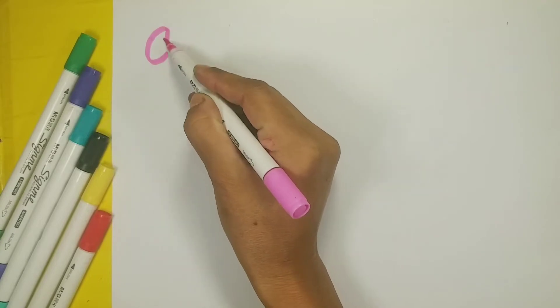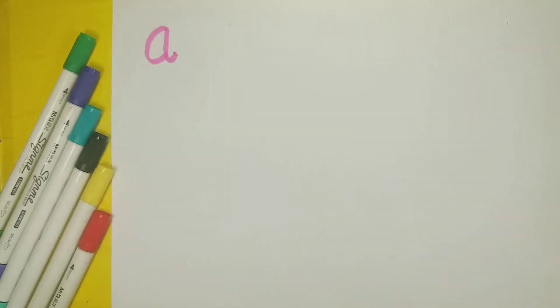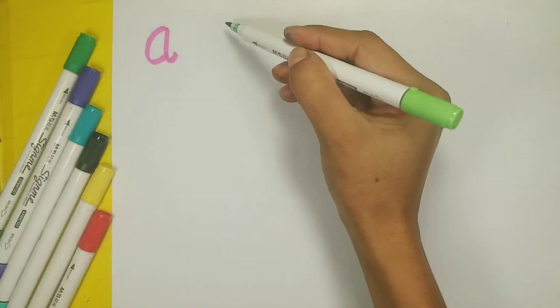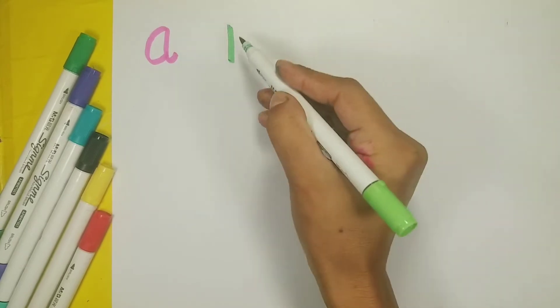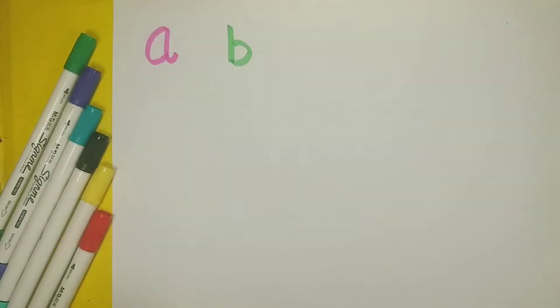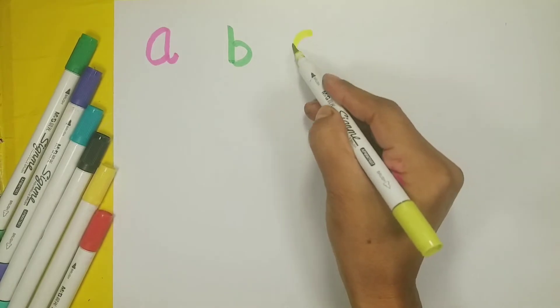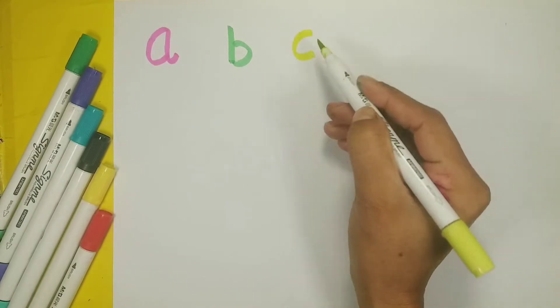A, A for ant. Light green color B, B for ball. Yellow color C, C for cat.